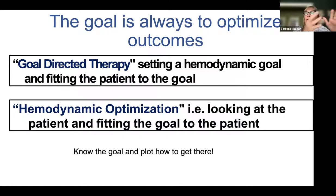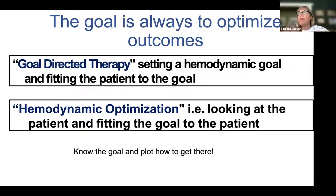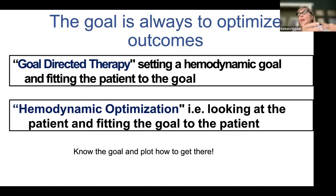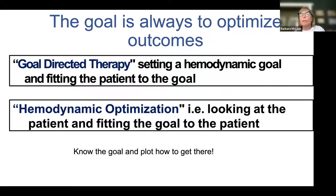The first is goal-directed therapy, where you set a goal — for example, a cardiac output of 4 or a cardiac index of 2.8 — and make the patient fit the goal. The preferred method, however, is hemodynamic optimization, which looks at the patient and takes into account all criteria including indices of tissue perfusion like base deficit, anion gap, and serum bicarb.